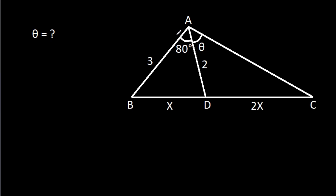In this video, we have been given that AB is 3, AD is 2, BD is x, CD is 2x, and angle BAD is 80 degrees, and angle CAD is theta. We have to find theta.